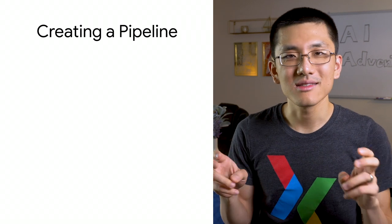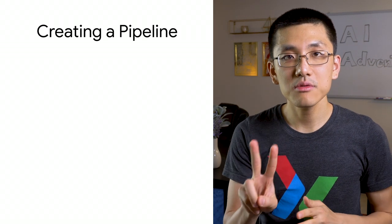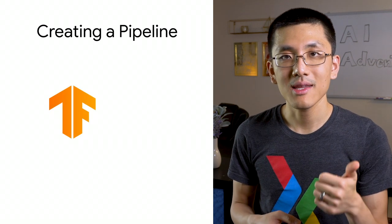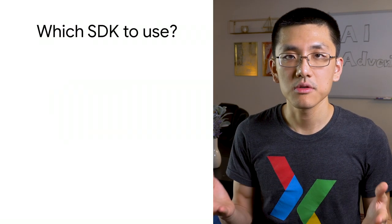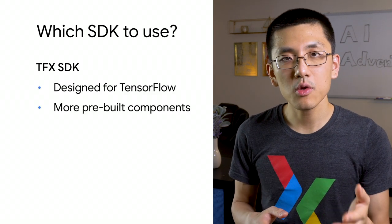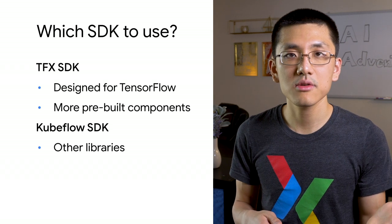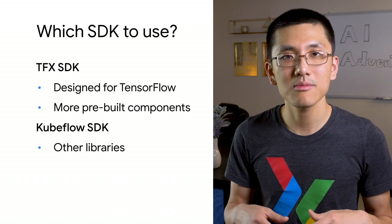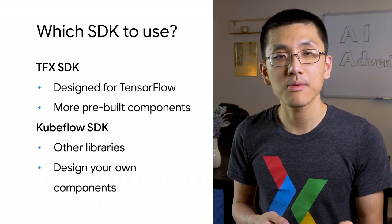Now you might be thinking this pipelines thing sounds really awesome, but how do I create my own pipeline? At the end of the day, we have two different ways to make pipelines. AI Platform Pipelines supports both the TFX SDK and the Kubeflow Pipelines SDK. If you're working with TensorFlow, use TFX — it's designed for TensorFlow and will make your TensorFlow code run seamlessly. Otherwise, use Kubeflow Pipelines; it's designed for any arbitrary library, so you can run everything from your scikit-learn models to PyTorch in your pipeline. TFX has the advantage of more pre-built components and is a more opinionated approach, while Kubeflow Pipelines is more open-ended and allows you to design your own pipeline components from scratch.